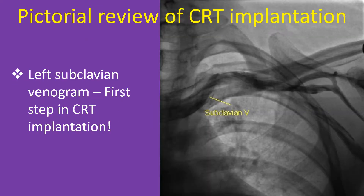Left subclavian venogram is usually the first step during the implantation of most cardiac implantable electronic devices. Iodinated contrast is injected into a left forearm vein and live fluoroscopy images captured for use as a roadmap during percutaneous subclavian vein puncture for the introduction of intracardiac leads. Patient position on the table is not changed after acquisition of the venogram so that the roadmap can be used for fluoroscopy-guided subclavian vein puncture.